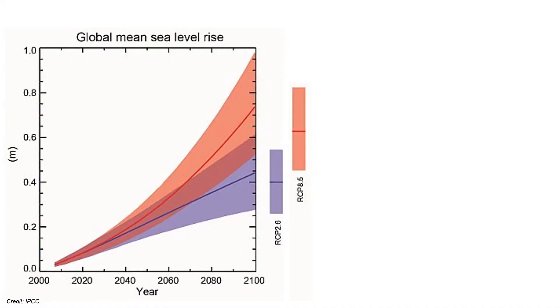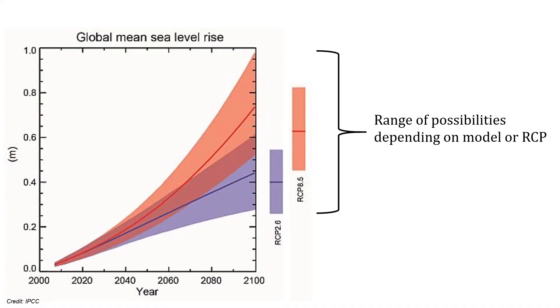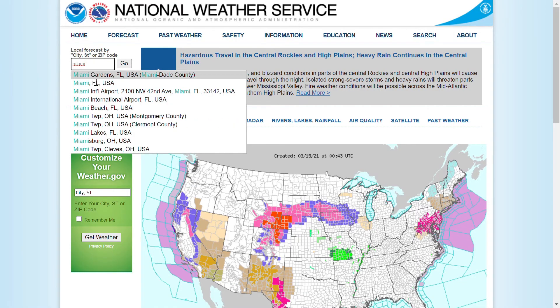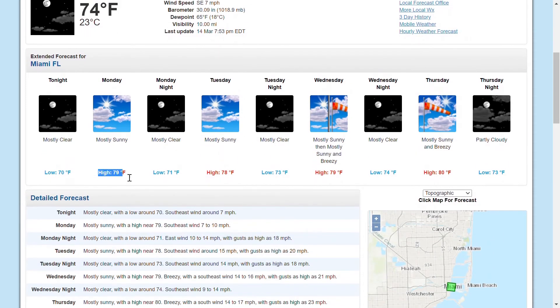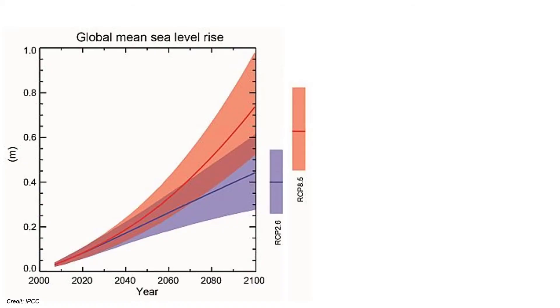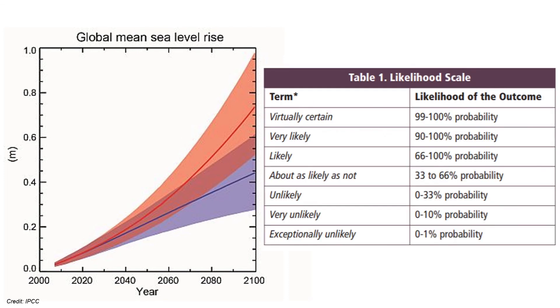Climate models aren't perfect, but they aren't meant to be. Scientists look at climate simulations as a range of possibilities. You can't look at model results as the definite state of the climate, as you would expect when you open a weather app to see the high temperature for today. Instead, with our abundance of data from various models, we can come up with a probability or likelihood that certain events will occur. If simulations generally agree between the models, scientists will be more confident about that particular climate response. For example, all models and scenarios predict an increase in global sea levels by 2100, so we consider sea level rise a very likely outcome.